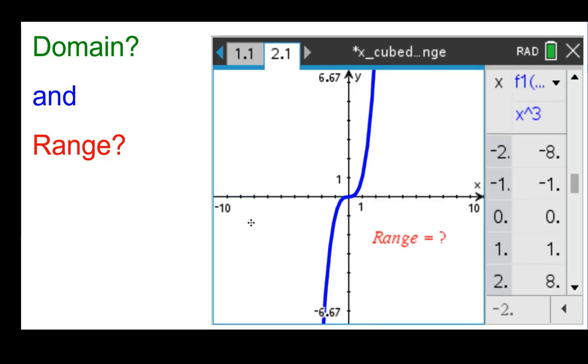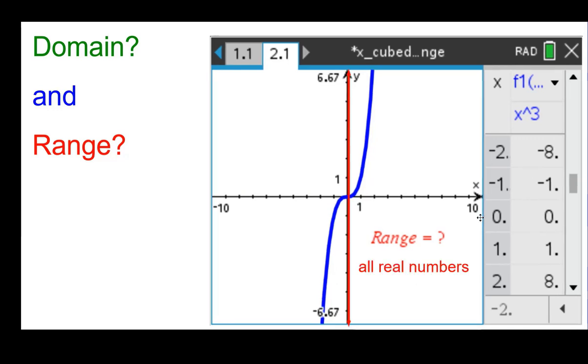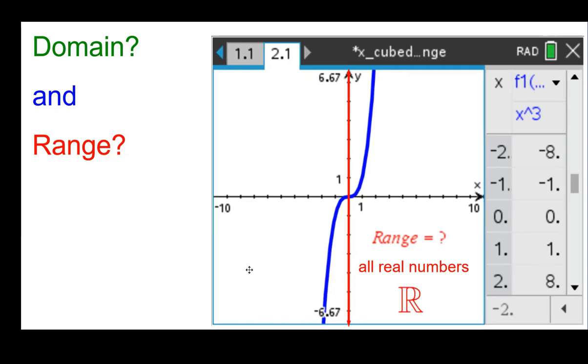The range, looking at the y values here. It looks like every y value has an x coordinate to go with it. So the range is all real numbers. Also that fancy script R. So the domain and the range is all real numbers for both. For this function right here.